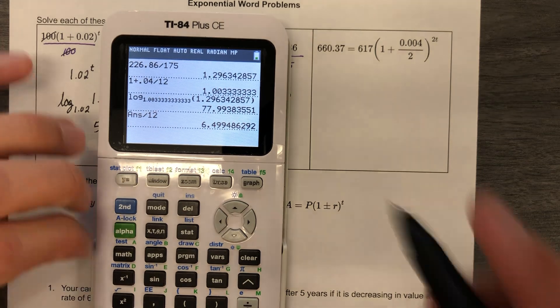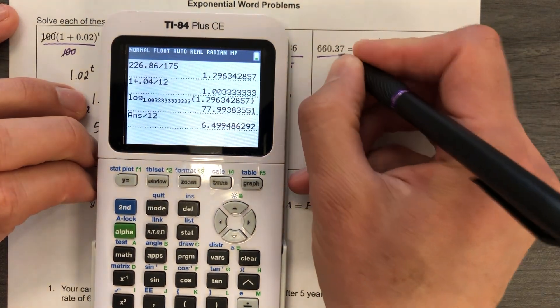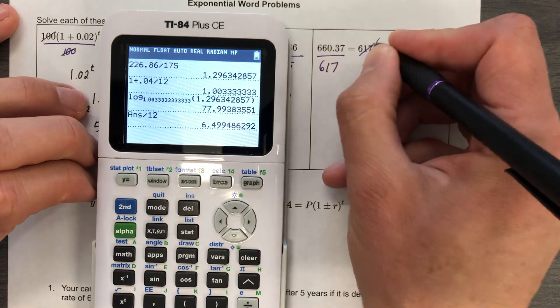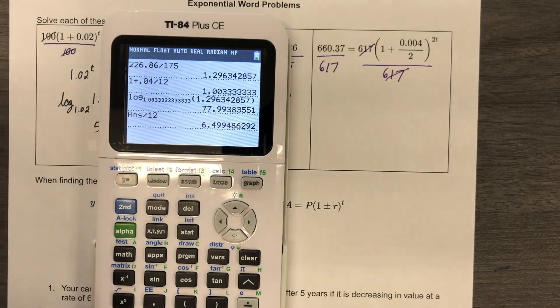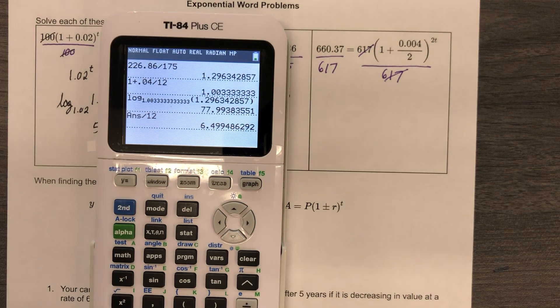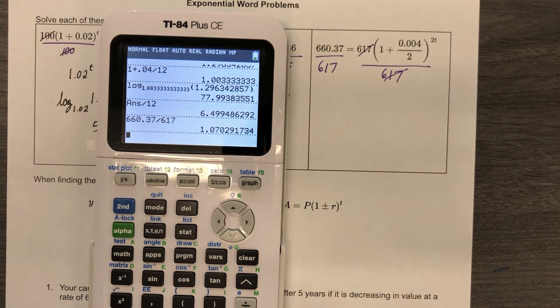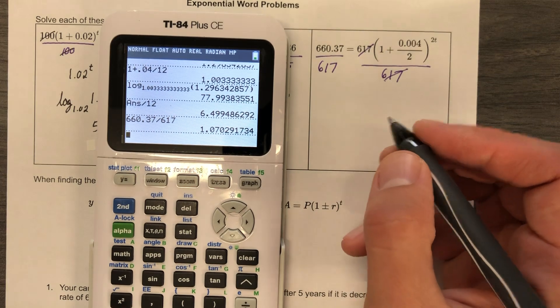All right, last one of this set before we really delve into some ridiculousness, and let's see. 66037 divided by 617, and I got some craziness here.